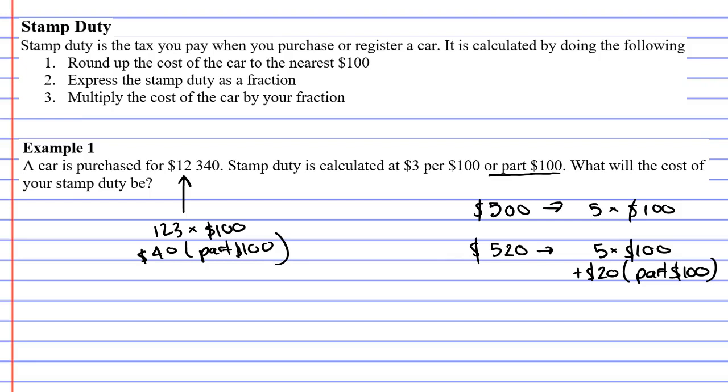Anyway, to work this out, to calculate our stamp duty, we're just going to follow these three steps. So step one: round up the cost of the car to the nearest hundred dollars. So what we're going to do is we're going to take the $12,340 and we're going to round it up to $12,400.